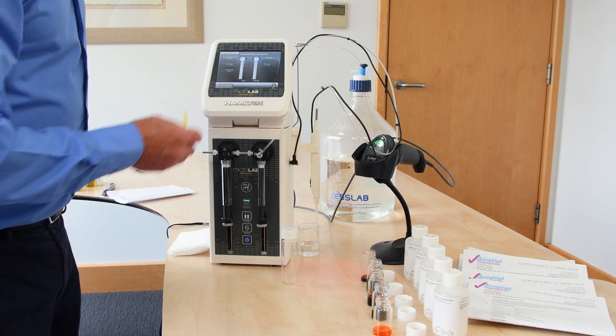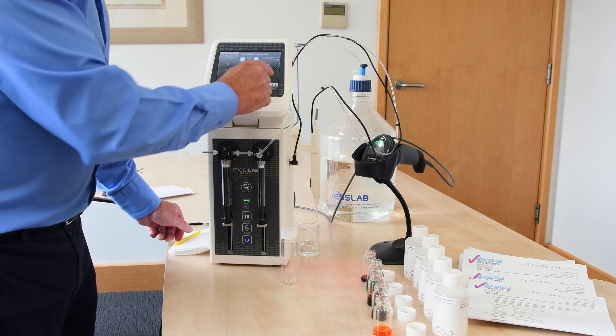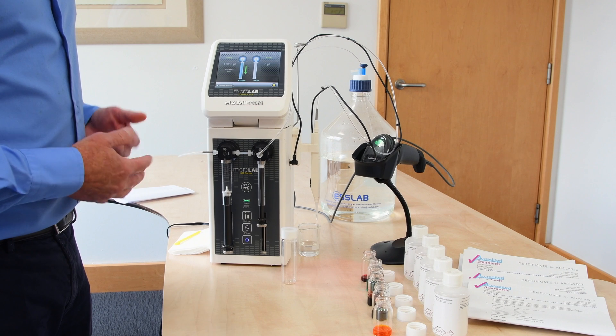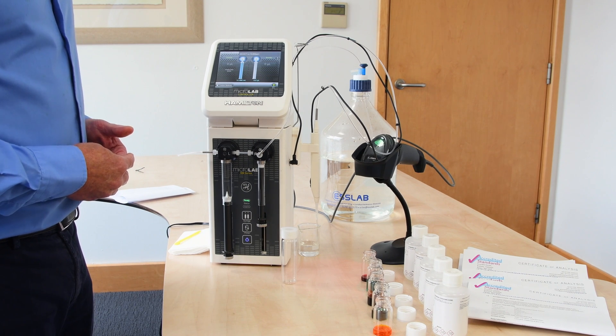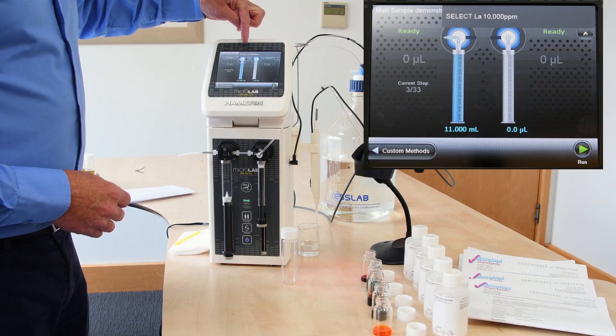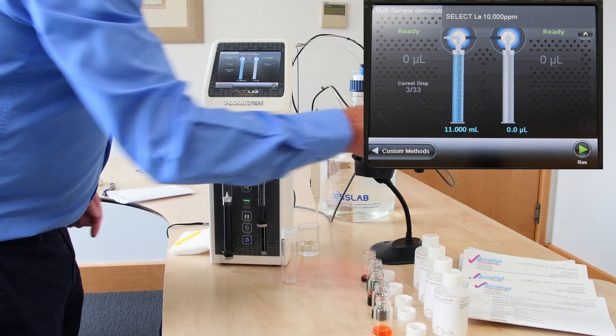So this is the step. It's actually told us it requires these standards and that's quite correct, and I can now say I want to run this program. The first part of the step was exactly as we did in our wizard program. It's aspirated the first amount of deionized water, but it's asked me to select the lanthanum 10,000 parts per million standard, which I have.